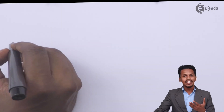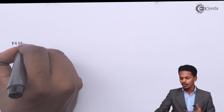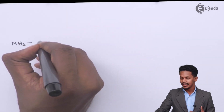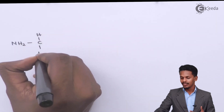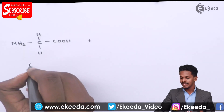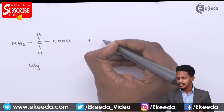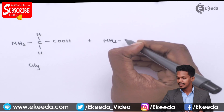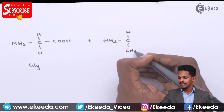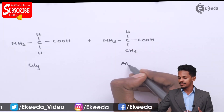Suppose if we talk about the reaction of glycine and alanine. Glycine has the formula NH2-CH2-COOH. Glycine is then treated with alanine, which is NH2-CH(CH3)-COOH.